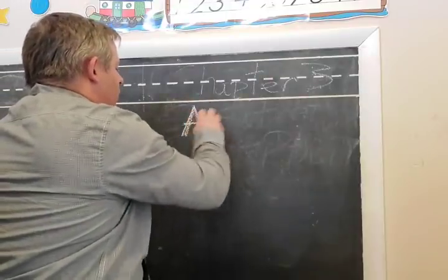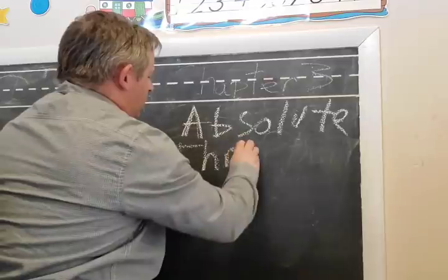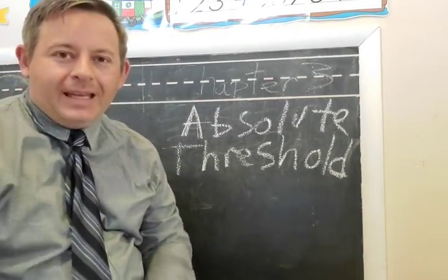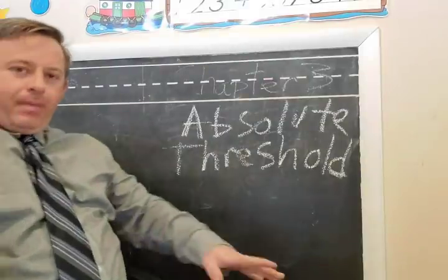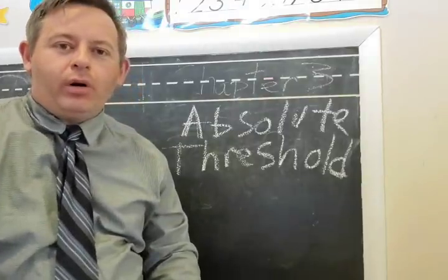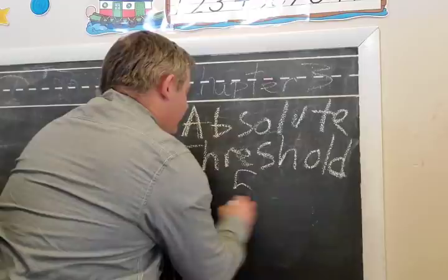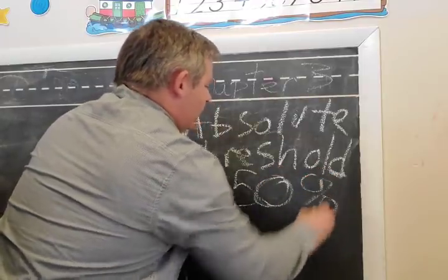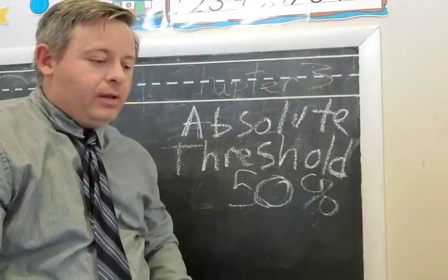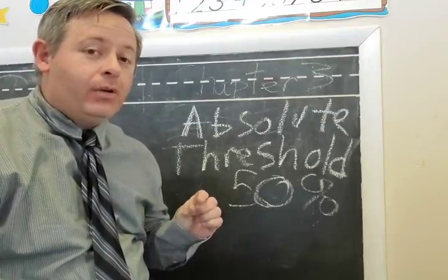There's a term for the lowest limit called the absolute threshold. The absolute threshold is defined as the minimal amount of stimulus for an organism to register it — to hear it, see it, or whatever — 50% of the time. That 50% is the key. If it's loud enough that I can hear it every time, or too quiet that I can't hear it at all, then it's not the absolute threshold.